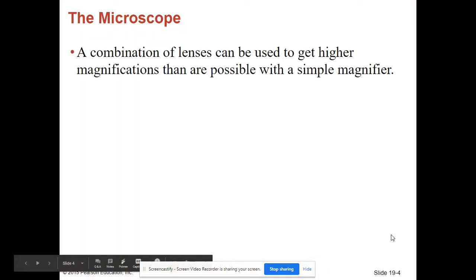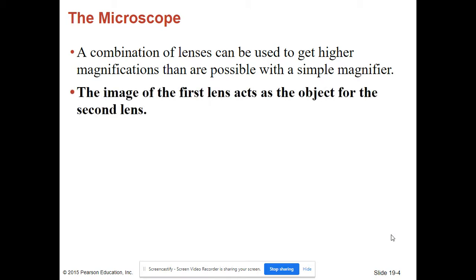The microscope. A combination of lenses can be used to get higher magnifications than are possible with a simple magnifier. The image of the first lens acts as the object for the second lens. So when we go to tackle these problems, what you're basically going to do is use your mirror equation.